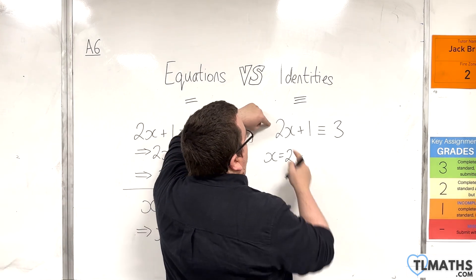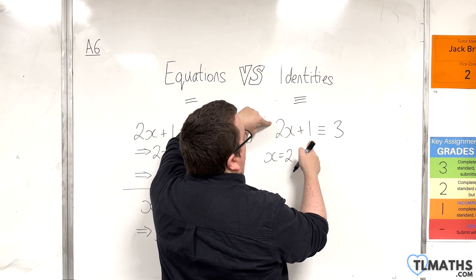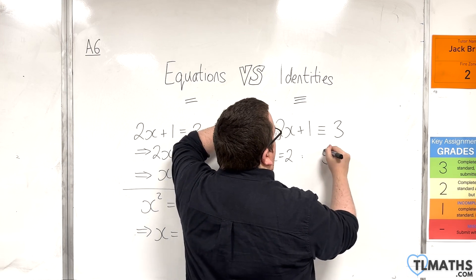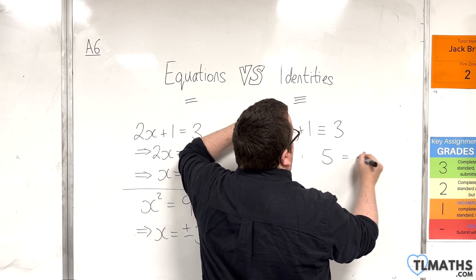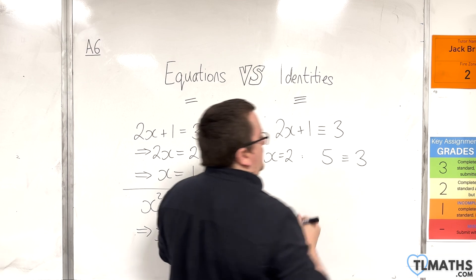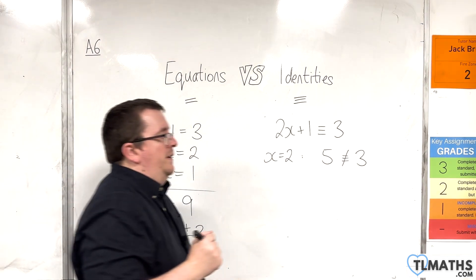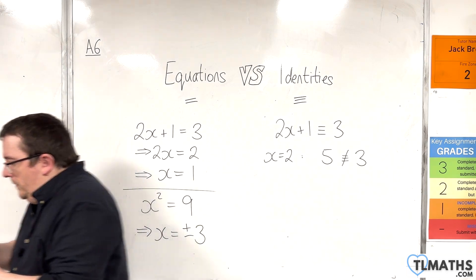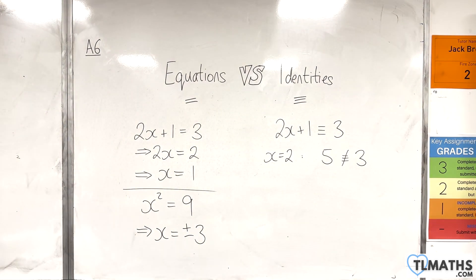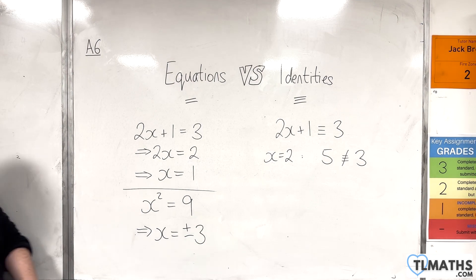Well, in the left-hand side, I get 2 lots of 2 plus 1, which is 5. And I'm saying that that is the same as 3, which is obviously nonsense. So they are not equivalent. So we can't really use the equivalency symbol in that way.